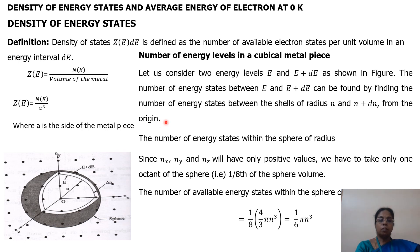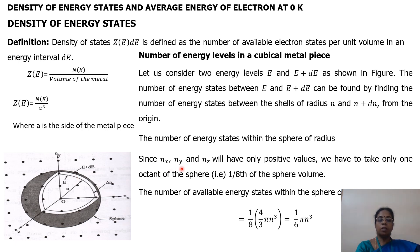If we assume one energy state per unit volume, then to find the number of energy states within the sphere of radius N, we find the volume of the sphere of radius N. But when you take the entire volume of the sphere, it will have the indices Nx, Ny, Nz taking both positive and negative values. But we know that these indices Nx, Ny, Nz are always positive, so we take only the octant of the volume of the sphere, which gives Nx, Ny, Nz positive values.